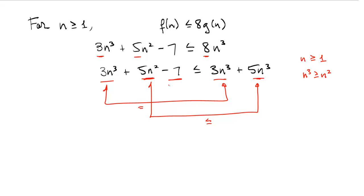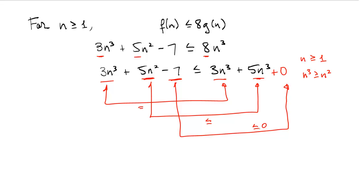Finally, the minus 7 term on the left doesn't have a counterpart in the expression on the right. But if we add a plus 0 on the right, we can use the fact that minus 7 is less than or equal to 0. So term by term, the expression on the left is less than or equal to the expression on the right, and this is exactly how the proof will go.